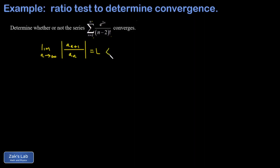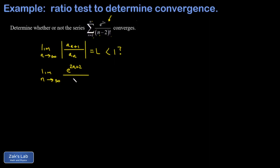So the big question is: is this limit less than 1? We're going to write down the ratio of the n plus 1 term to the nth term. I don't need to worry about the absolute value bars here because every term is positive. Substituting n plus 1 for n gives e to the 2n plus 2 in the numerator and an n minus 1 factorial. Then I divide by the nth term — the same as multiplying by its reciprocal — giving n minus 2 factorial over e to the 2n.